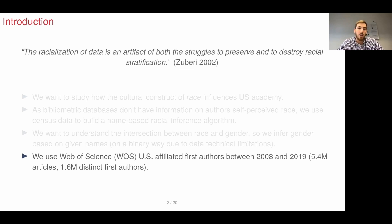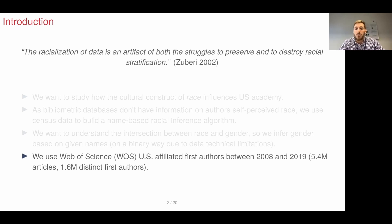We are using Web of Science US-affiliated first authors from 2008 to 2019. This is because before 2008 we don't have the given names of authors that we need for gender inference. We are focusing on the US because the concept of race and the categories of race are a cultural construct and therefore are country dependent — it's not something we can do on a global level without incurring biases and problematic conceptualizations. This database has 5.4 million articles and 1.6 million distinct authors.